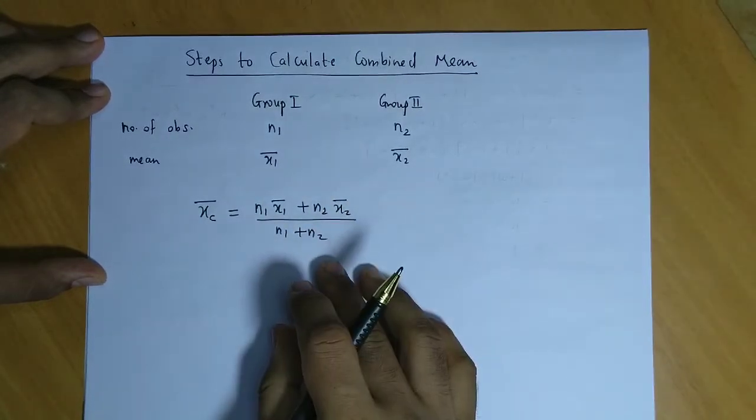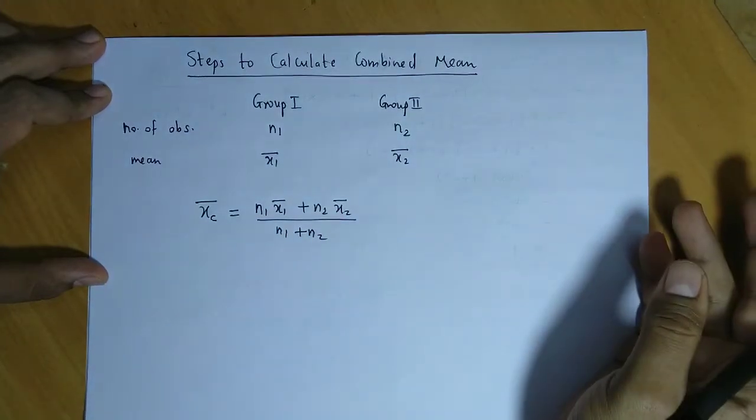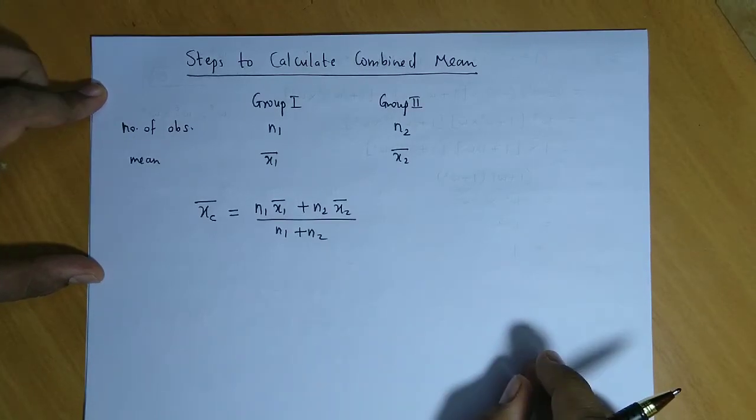This can also be extended for three groups, four groups, and so on. These are the steps to calculate the combined mean for two or more groups.